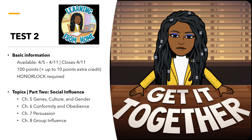Just like Test 1, Test 2 will be administered via HonorLock, so take the HonorLock practice quiz to make sure your computer is functioning — you need a camera and microphone. It's not open book, but you are allowed one page of notes, two-sided. The chapters covered are 5, 6, 7, and 8 — essentially Test 1 was Part 1 and Test 2 is Part 2, covering social influence.